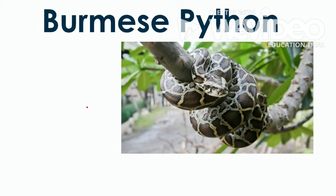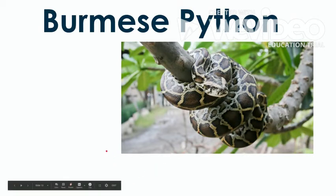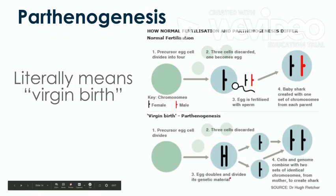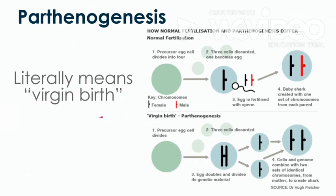The last one we're going to talk about today is the Burmese python. What do you think — sexual, asexual, or both? Turns out Burmese pythons can use both. Sexually, you know the basics — egg and sperm. But let's talk about this other thing: parthenogenesis. Parthenogenesis literally means virgin birth. Normally out in the wild a Burmese python would do the normal sexual thing — here's your egg, sperm comes into the egg, mom's genes combine with dad's genes, and that creates the baby. That's the sexual reproduction of the Burmese python.